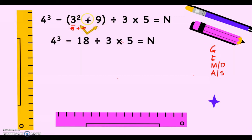We do this first — the groupings — and we have 9 plus 9 is 18. The rest of the equation we just copy. So this is now our equation after the groupings. Let's proceed to the exponent: we have 4 cubed. 4 cubed means 4 times 4 times 4; 4 times 4 is 16, times 4 that is 64.